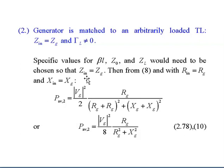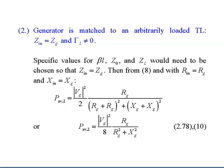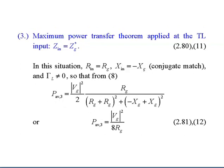Applying this to the previous equation, it simplifies into Equation 10, where P_average equals |V_G|² over 8 times R_g over (R_g² plus X_g²). For Case 3, the maximum power transfer theorem is applied at the transmission line input: Z_in equals the conjugate of Z_g. In this situation, R_in equals R_g but X_in equals minus X_g — this is the conjugate match — and the reflection coefficient at the load is not zero.